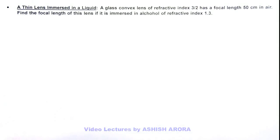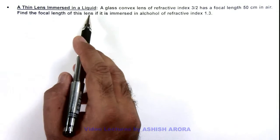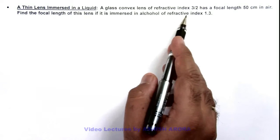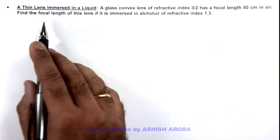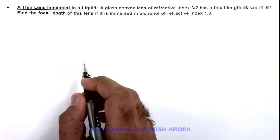In this illustration, we'll discuss a situation when a thin lens is immersed in a liquid. Here we are given that a glass convex lens of refractive index 3/2 has a focal length 50 centimeter in air, and we are required to find the focal length of this lens if it is immersed in alcohol of refractive index 1.3.